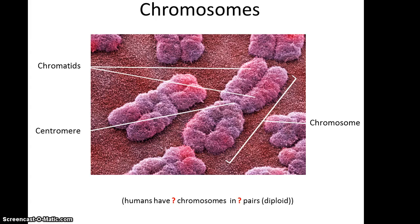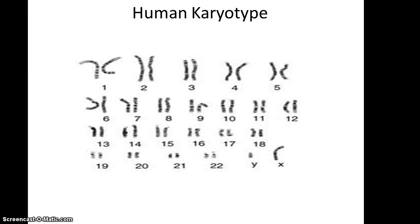A human karyotype is produced by taking a cell that has entered the chromosome-forming state, squashing it, photographing and magnifying it, then pairing up the chromosomes from 1 through 22. Chromosome 23 is special and is referred to as the sex chromosome because it is used to determine the gender of a person. An X and a Y would be the karyotype of a male, while two X's would be the karyotype of a female.